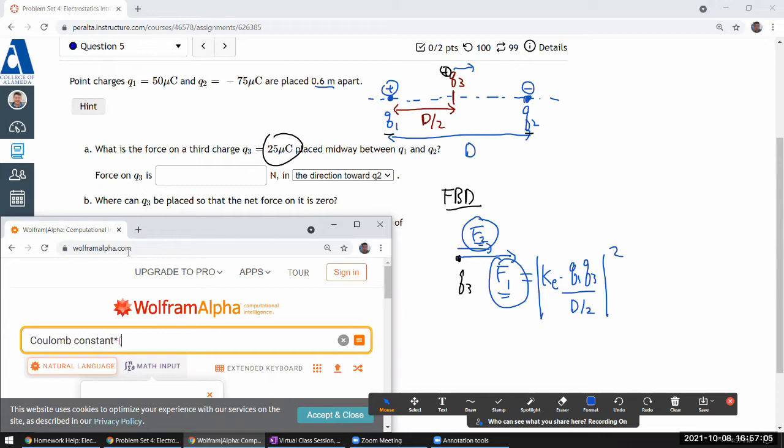Let me do Coulomb constant times Q1, that's 50 microcoulombs, times Q3, 25 microcoulombs, divided by the distance 0.6 meters squared. So I don't know why I have that squared. I don't, and why I don't have this thing squared. Put the square in the wrong place. Okay, so that's F1.